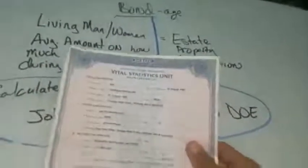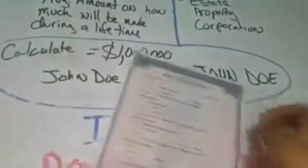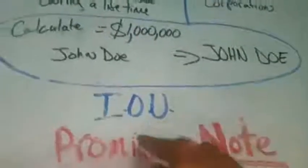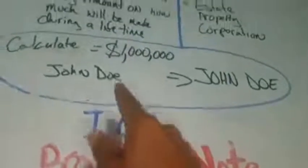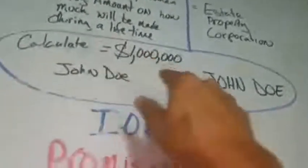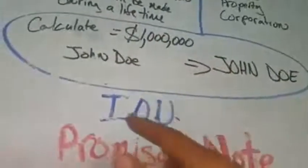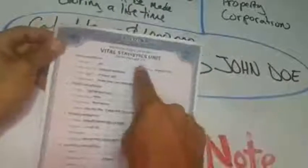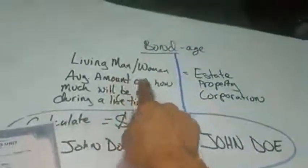So the living man gets estimated, valued, and attached to this, and that attachment is called the bond — this is the bondage that happens. Now this bond, because it is attached to a living man that has value, this also has some value. This is what's used as a promissory note — an 'I owe you.' Like a colonial bank note, it's a promissory note. This IOU comes from the property that is created upon the birth of a living man or living woman.